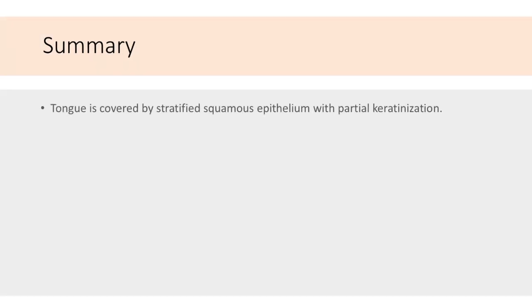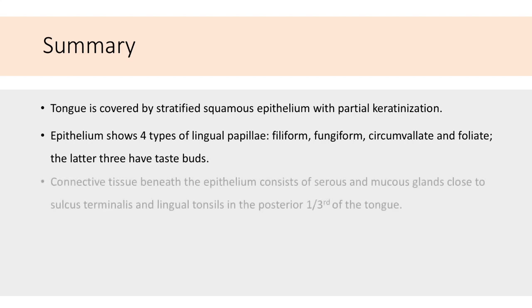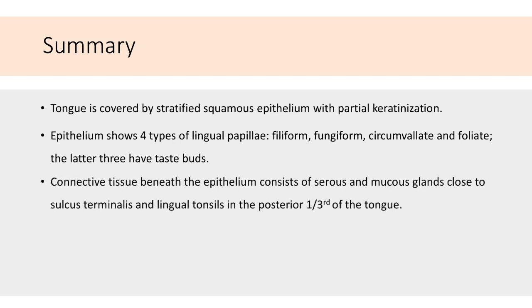To quickly recollect what we have seen: the tongue is covered by partially keratinized stratified squamous epithelium. The epithelium shows four types of lingual papillae on the dorsal surface — filiform, fungiform, circumvallate, and foliate — with the latter three types bearing taste buds. Connective tissue beneath the epithelium contains serous and mucous glands close to the sulcus terminalis, and lymphoid tissue forming lingual tonsils in the posterior one-third of the tongue.